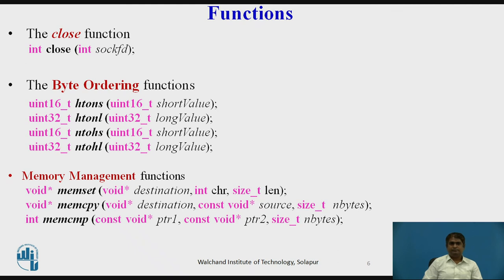The memory management functions. We need some functions to manage values stored in memory, and there are three common memory functions. The first, memset (memory set), is used to set a specified number of bytes in the memory defined by the destination pointer. The second, memcpy (memory copy), is used to copy a specified number of bytes from one part of memory to another, from source to destination. The third, memcmp (memory compare), is used to compare two sets of bytes starting from pointer 1 and pointer 2. The result is zero if the two sets are equal, less than zero if the first set is smaller, and greater than zero if the first set is larger.